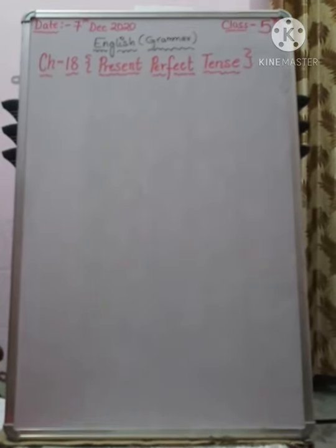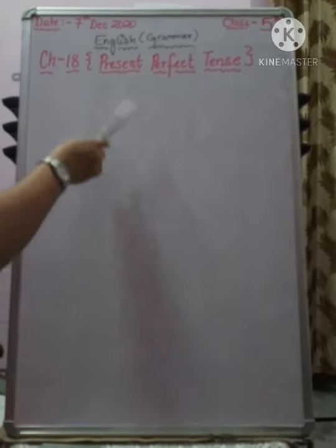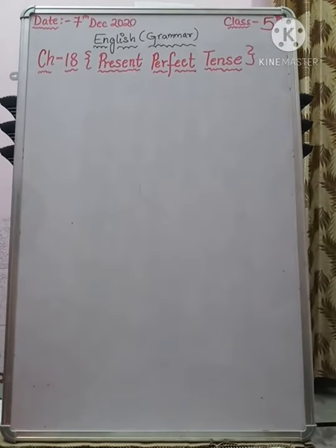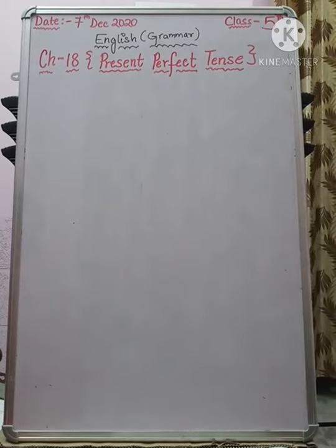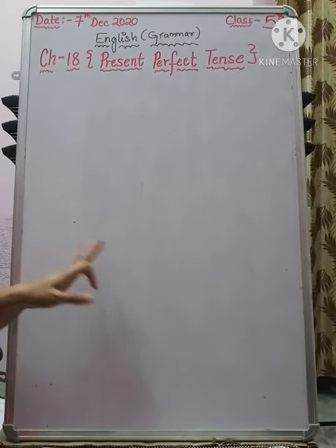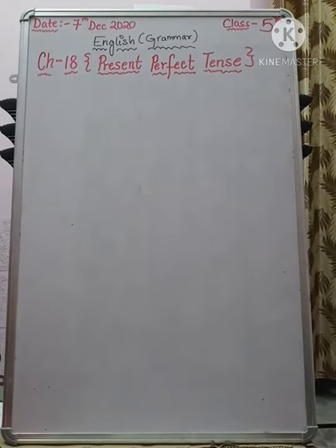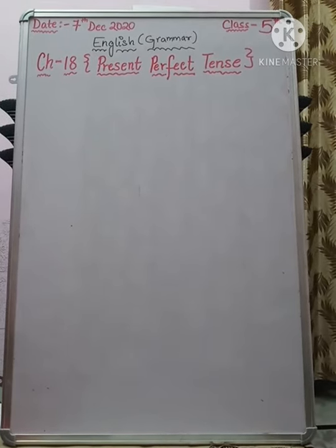Good morning class, how are you all? I hope you all are good. This is your English teacher Jyoti ma'am. Welcome to today's English class. Today we will be starting a new English grammar topic — chapter number 18: Present Perfect Tense. We have present perfect tense and present continuous tense. In perfect tense the auxiliary is 'has/have', and in continuous tense it is 'ing'. Now we will be doing present perfect tense. This is a bit complicated, so listen carefully.